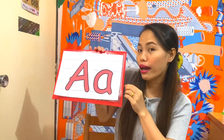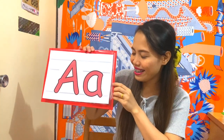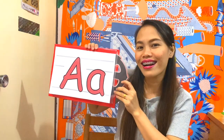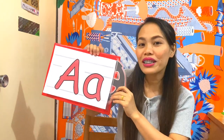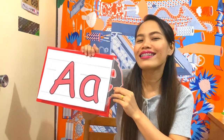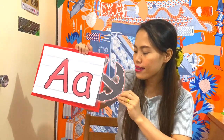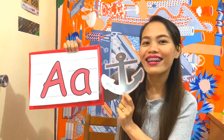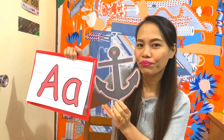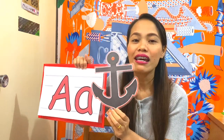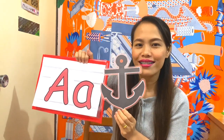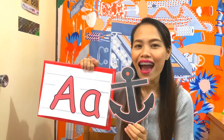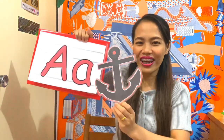Okay, next picture we have is — everybody look here! Oh, what is this? It's color... what's the color? Yes! It's color black! So what is this? Look! What's this? Start with letter A. It's an... Very good! Very good! Everybody say A. Say it again! A. Very good! A. Very good everyone! You're doing great!